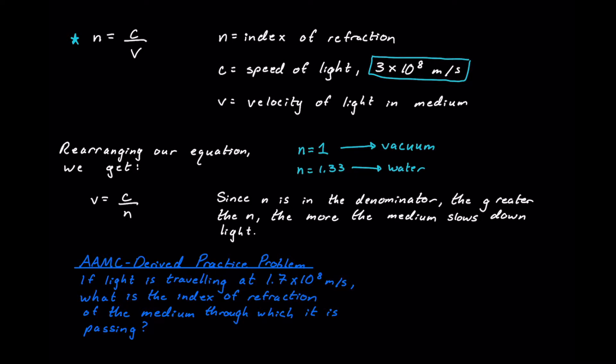Yeah, that being said, let's break into a double AAMC derived practice problem. So I've taken this from a practice problem and rearranged it a little bit to help us practice a bit more. So let's read it: If light is traveling at 1.7 times 10 to the eighth meters per second, what is the index of refraction of the medium through which it is passing? So feel free to pause the video and try the problem yourself.